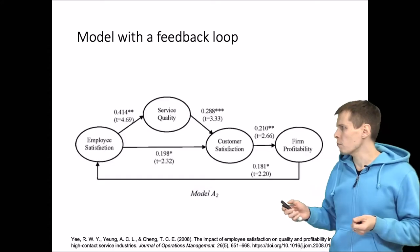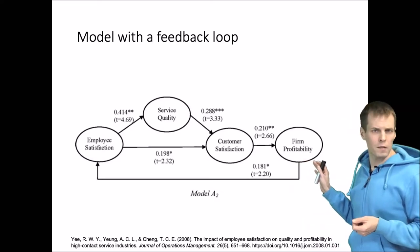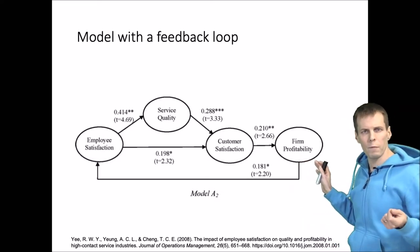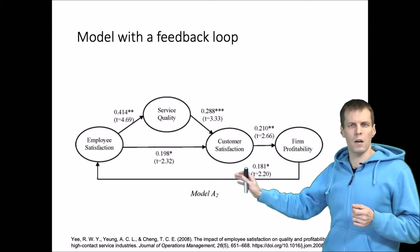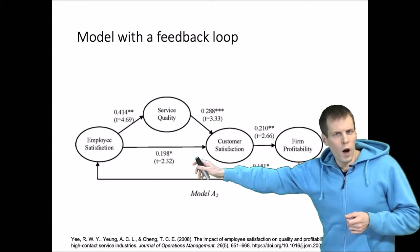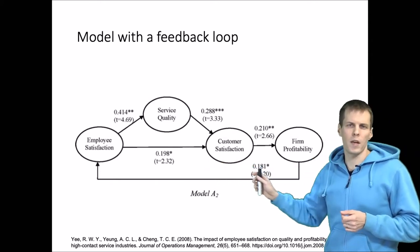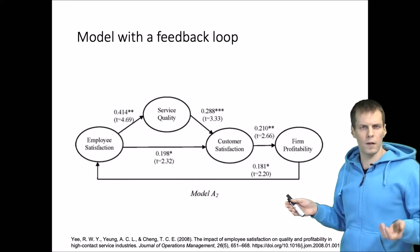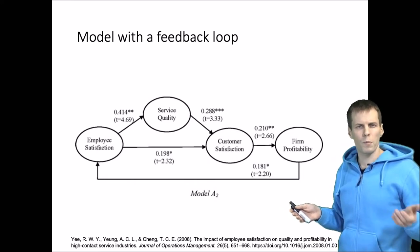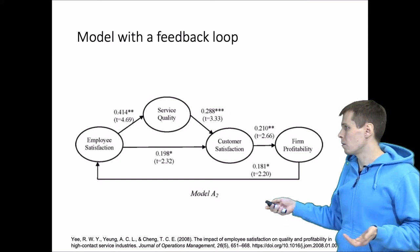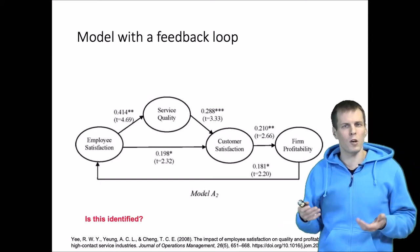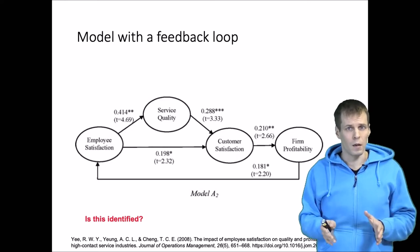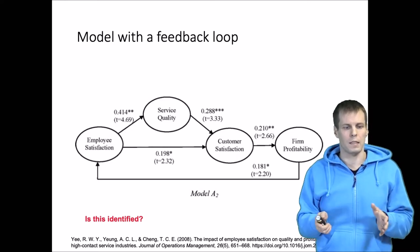So how about more complex scenarios? For example, if we have a feedback loop with four variables and one partial mediation in between, is this identified or not? The rules on the previous slide don't really help here, but this model is in fact identified. We know that, but next we will discuss why.